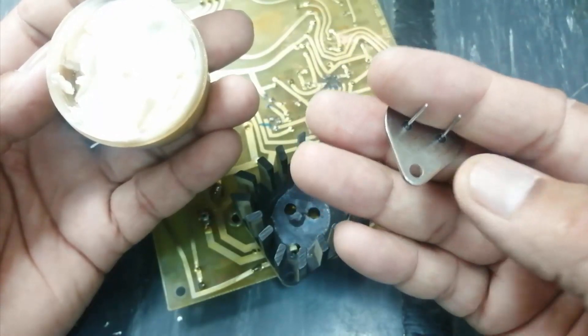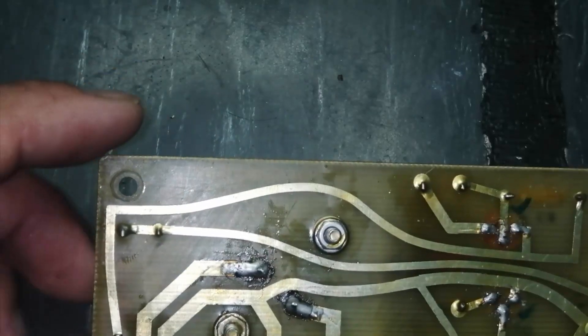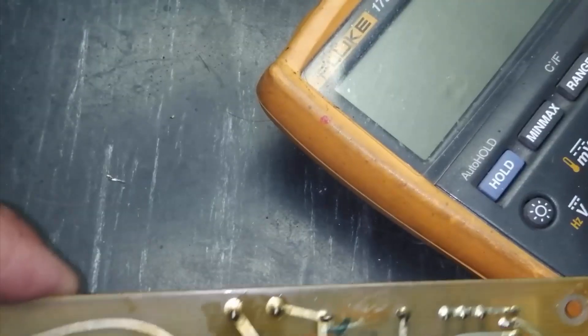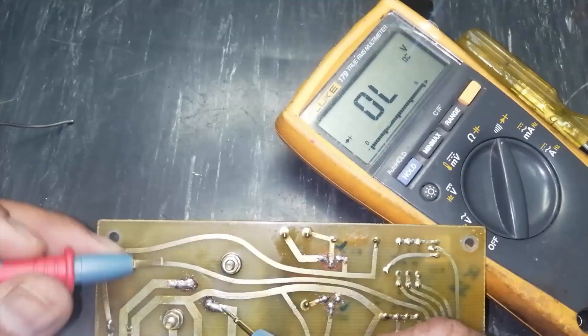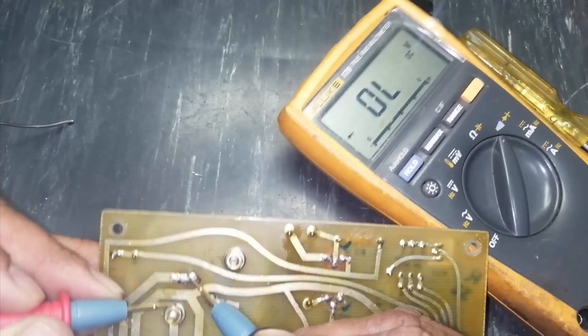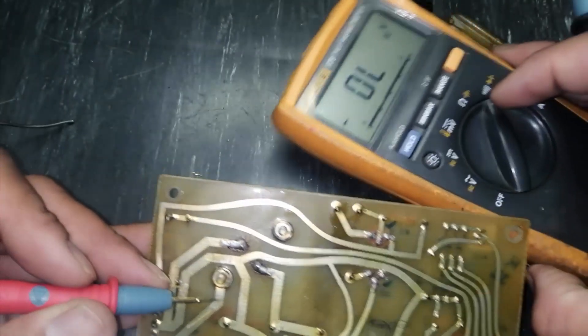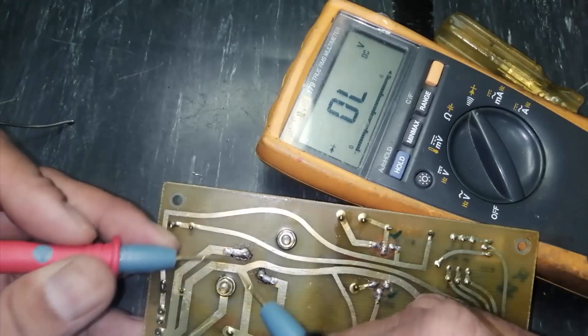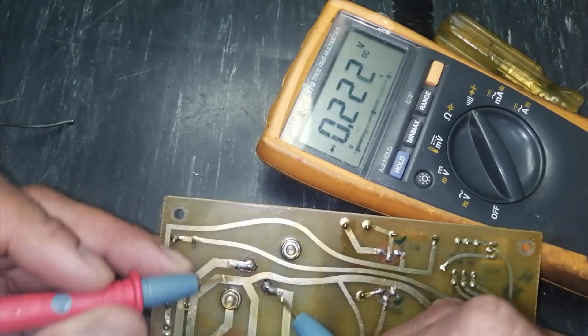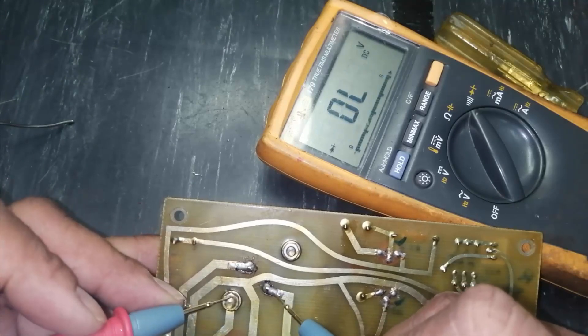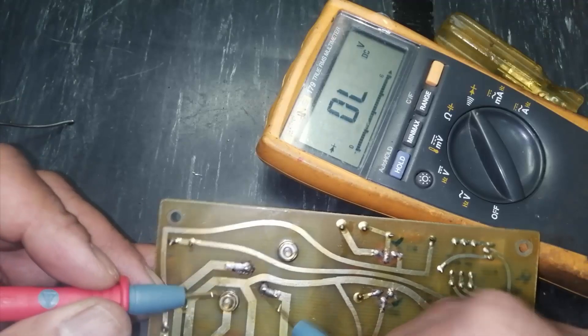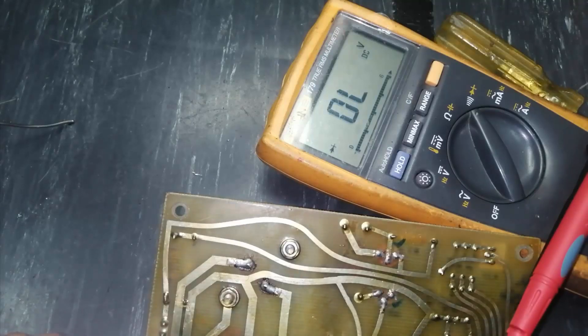Now our AVR mode is ready. Now we can check 0.6. Before this, it was making short. Now it is okay. 0.5. That's right. Thanks for watching. Assalamualaikum warahmatullahi wabarakatuh.